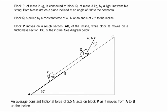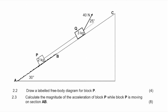In the last question from 2019, a block of mass 2 kg is connected to Q of mass 3 kg by a light inextensible string. Both blocks are on a plane inclined at 30 degrees to the horizontal. Q is pulled by a constant force of 40 newtons at an angle of 25 degrees. P moves on a rough section, Q moves on a frictionless section of the incline. The average constant frictional force acting on P is 2.5 newtons. The first question is to draw a labelled free body diagram for P.